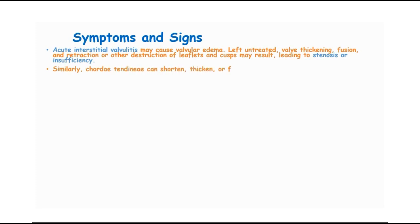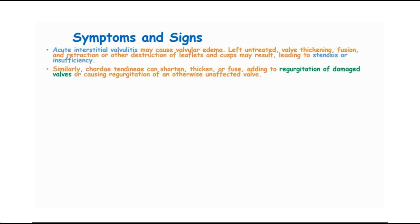Similarly, the chordae tendineae can shorten, thicken or fuse, adding to regurgitation of damaged valves or causing regurgitation of otherwise unaffected valves.